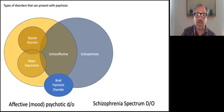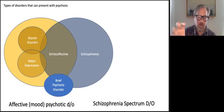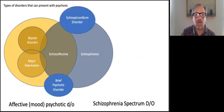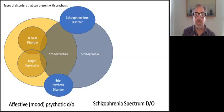People can have a brief psychotic disorder from which they recover. This can fall in either the affective or schizophrenia spectrum category. Schizophreniform, as I mentioned earlier, can only persist for up to six months. It's kind of a preliminary diagnosis for somebody who you think may be developing schizophrenia.